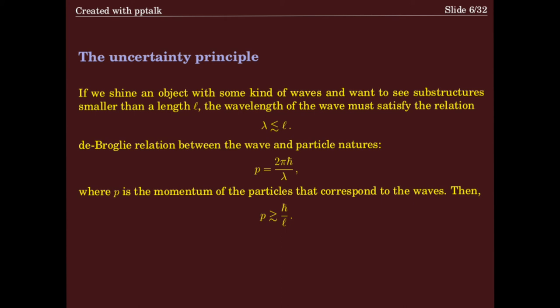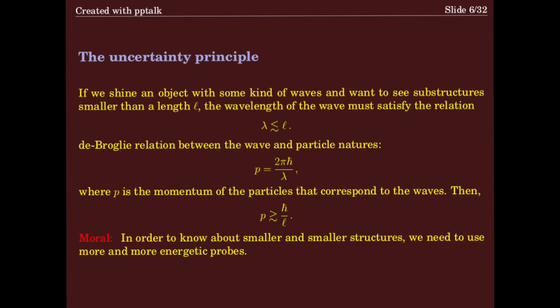The de Broglie relation between wave and particle nature tells you that if you have a wave with wavelength lambda, the corresponding particles have momentum equal to 2π ℏ divided by lambda. So the momentum P will have to be bigger than ℏ over L. The moral of this story is: if you want to know about smaller and smaller structures, you have to use more and more energetic probes. This is a very important lesson.